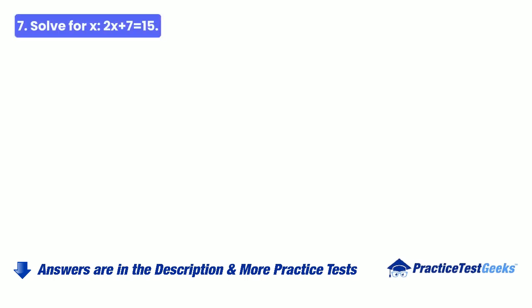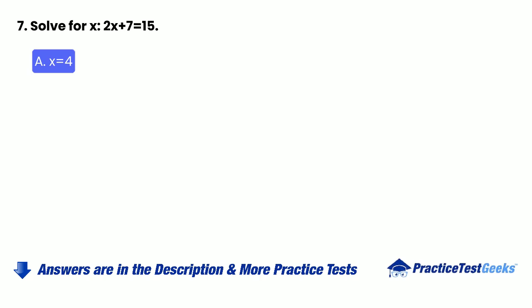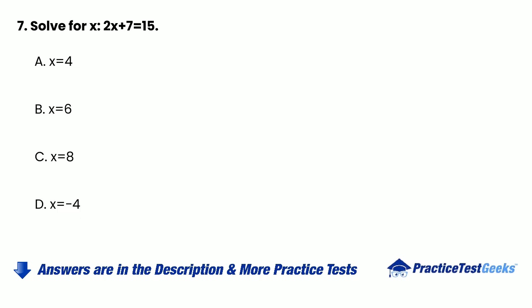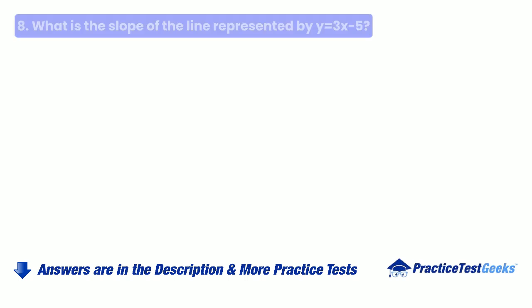Question 7: Solve for x: 2x + 7 = 15. A. x = 4. B. x = 6. C. x = 8. D. x = negative 4.